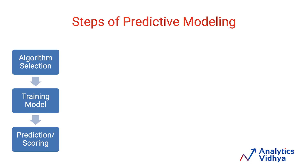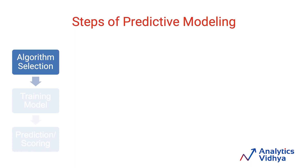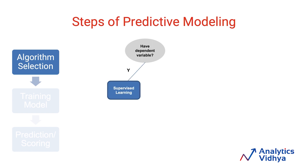Predictive modeling consists of three steps: algorithm selection, training your model, and making predictions. For algorithm selection, a dependent variable is what we measure in a model — these variables are dependent on independent variables, which are those we use to predict the dependent variable. Algorithms in predictive modeling can be broadly classified into two types: supervised learning algorithms and unsupervised learning algorithms. The presence or absence of a dependent variable mainly decides the choice of algorithm.